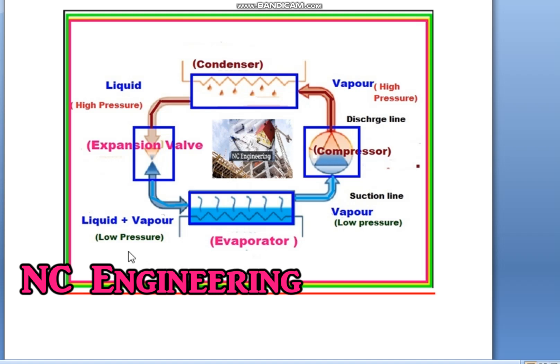When the low pressure mixture of liquid plus vapor refrigerant enters the evaporator, it takes the heat from the surrounding — it takes the heat from the air which is passing through these coils — the heat exchanger — and it converts into low pressure vapor.